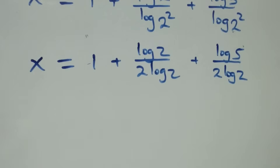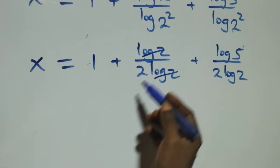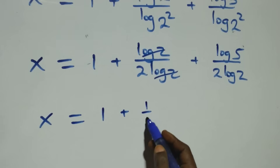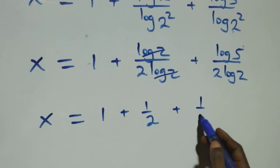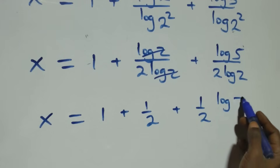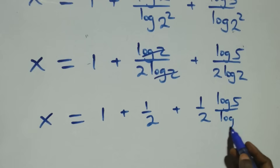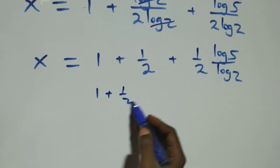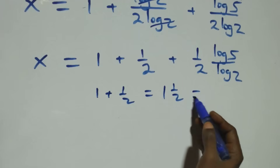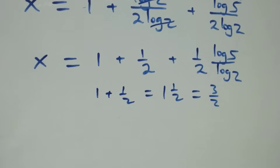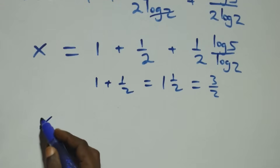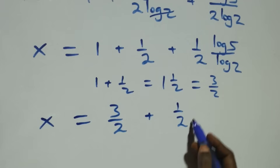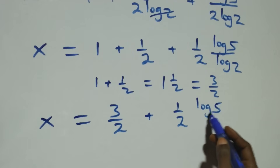The log 2 terms cancel in the first fraction, leaving 1 over 2. So x equals 1 plus 1/2, plus (1/2)(log 5 over log 2). Since 1 plus 1/2 equals 3/2, we get x equals 3/2 plus (1/2)(log 5 over log 2).